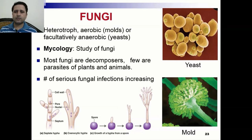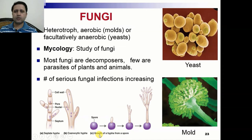In this figure you can see the septate hyphae: this is the septum in the hyphae, these are the pores, and these are nuclei present in the hyphae. This is the cell wall. This hyphae is non-septate — it does not have any septate structure. And here is the growth of a hyphae from a spore and how this spore germinates into the hyphae.